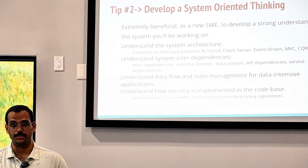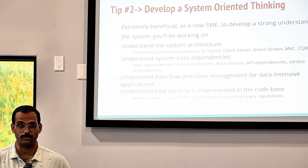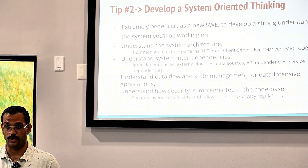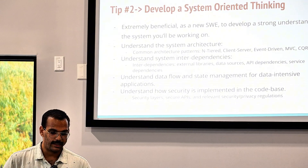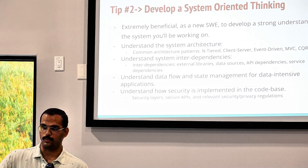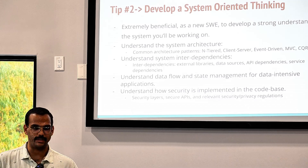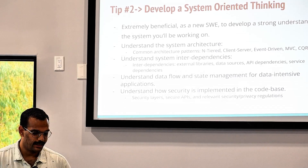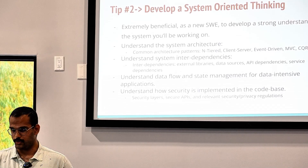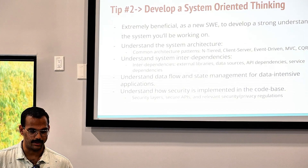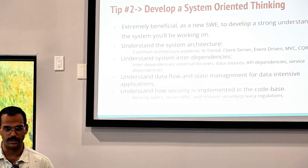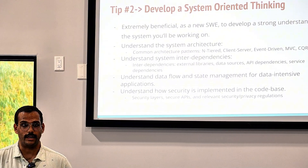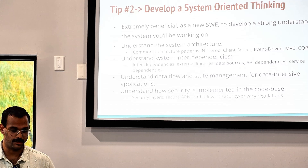For external libraries: if you're working on an ML application, you might need a certain version of TensorFlow, Scikit, or PyTorch, or a certain version of a CUDA library to make it work. Data sources could be what datasets you're pulling from, whether from APIs or a physical server. Service API dependencies involve external APIs you're subscribed to. Service dependencies could be hosting your entire application on AWS or Azure — how do you make sure that thing runs?